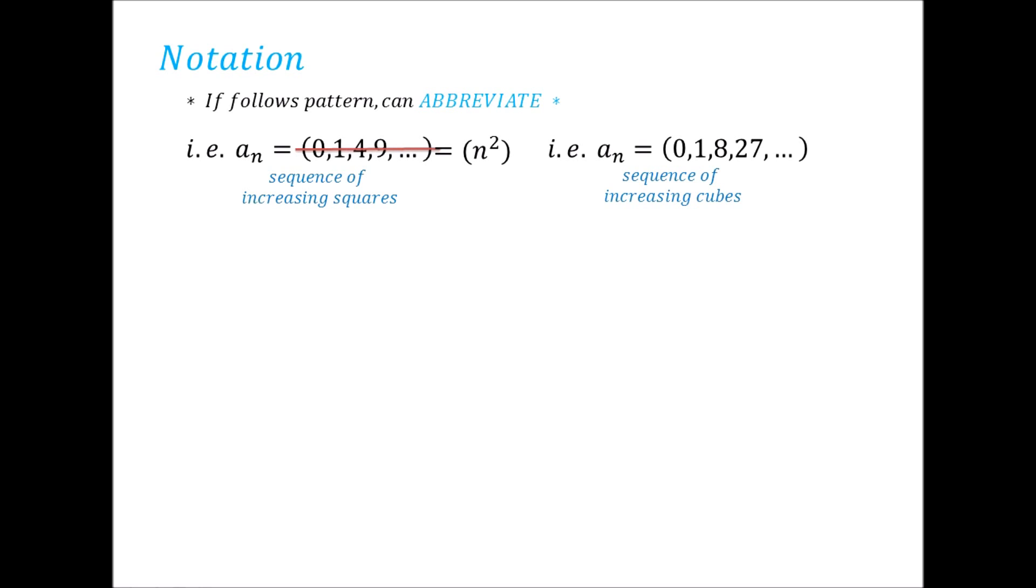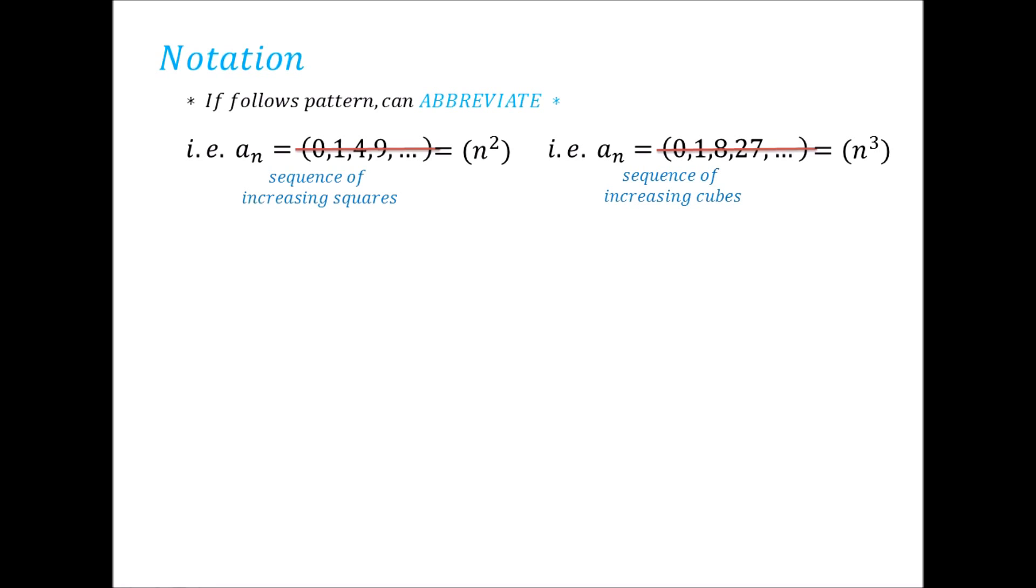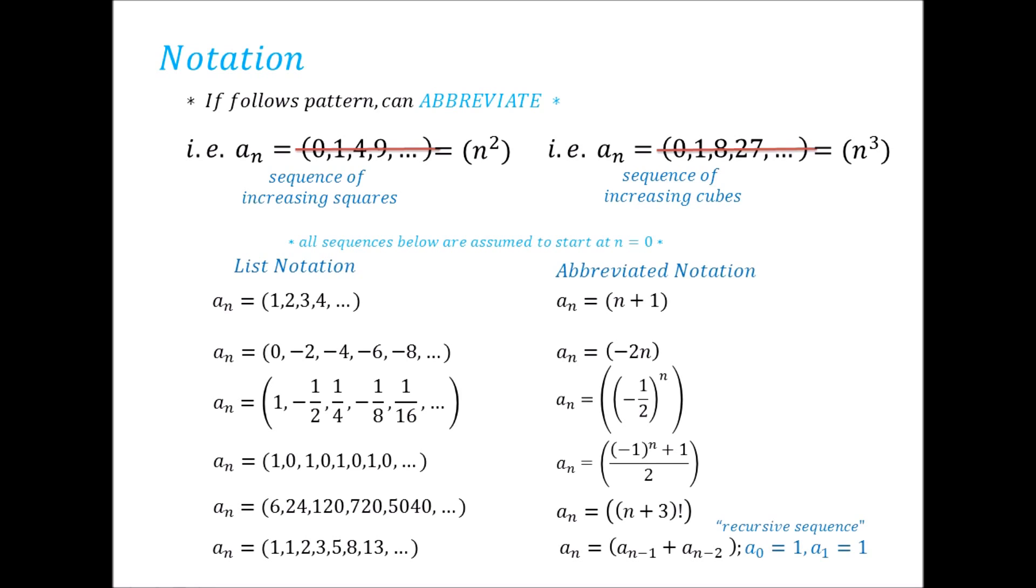Lastly, we don't have to write out our sequence as a list. If it clearly follows a pattern such as a sequence of increasing squares or cubes, we can just shorten it and write a_n = (n²) or a_n = (n³) respectively. We don't have to write out a_n = 1, 4, 9, dot dot or a_n = 1, 8, 27, dot dot each time. Here are some further examples of sequences with their shortened notation and list notation. You can pause and analyze them if you need to.